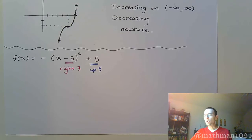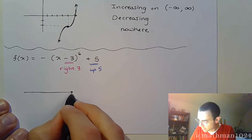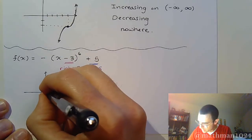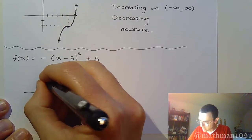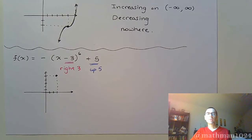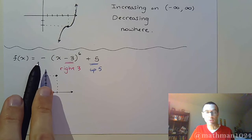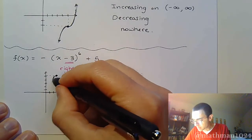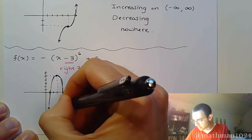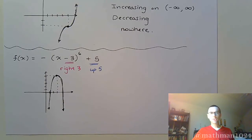To help us answer the questions about domain, range, and where it's increasing and decreasing, draw a picture. We'll go to the right 3 and up 5 — so that's my key point. It's going to look kind of like a parabola, but with the negative it's going to open upside down, so we just draw that shape. Again, we're not going for accuracy — just drawing a picture to see things so I can answer the questions.